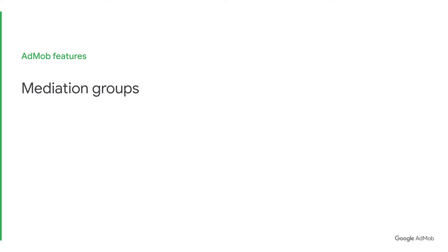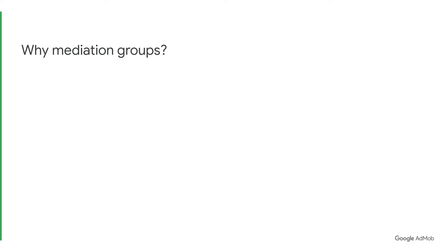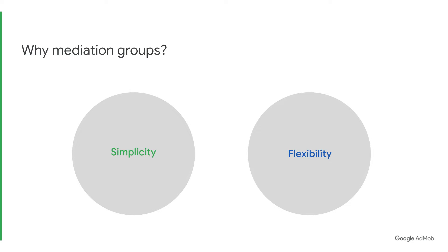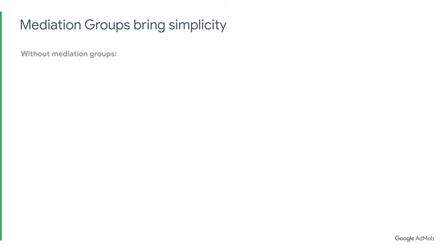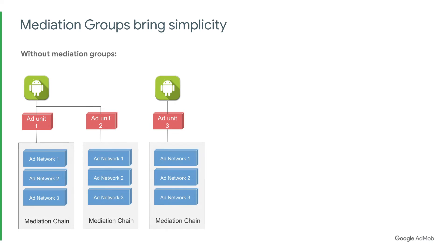The third feature is called Mediation groups, which makes it easier for you to manage mediation. A Mediation group is a collection of targeted ad units and countries that share the same mediation logic. Mediation groups help you achieve simplicity and flexibility for your ad monetization strategy. Without Mediation groups, you need to go into individual ad units and create a waterfall for each one, which can take a huge amount of time when you have tens or hundreds of ad units.